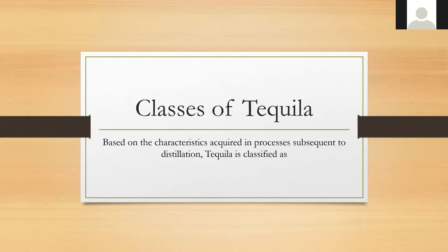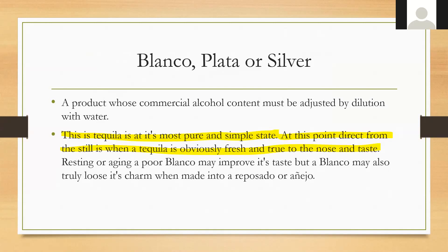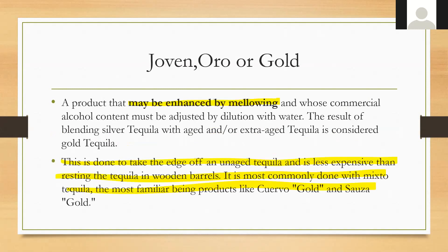The different classes of tequila start with silver — blanco or plata. This product's commercial alcohol content must be adjusted by dilution with water only. It's tequila at its most pure and simple state. When visiting a distillery, you typically start with blanco — if the blanco is not good, the añejo and reposado certainly won't be either. At this point from the still, tequila is fresh and true to the nose and the taste; resting a poor blanco may improve it, but a great blanco can also lose its charm when made into a reposado or añejo.